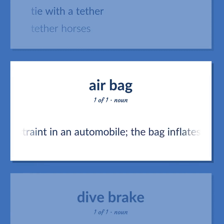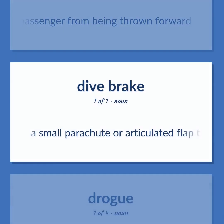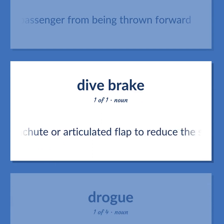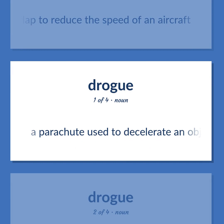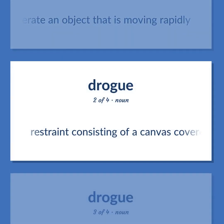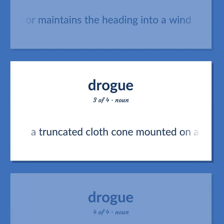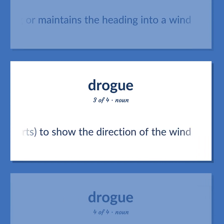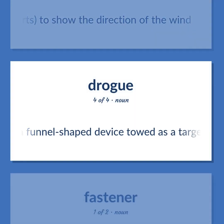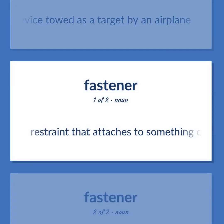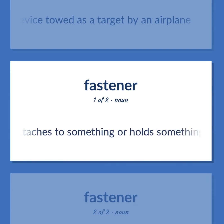Airbag: A safety restraint in an automobile; the bag inflates on collision and prevents the driver or passenger from being thrown forward. Drogue: A small parachute or articulated flap to reduce the speed of an aircraft. A parachute used to decelerate an object that is moving rapidly. Restraint consisting of a canvas-covered frame that floats behind a vessel; prevents drifting or maintains the heading into a wind. A truncated cloth cone mounted on a mast, used, e.g., at airports, to show the direction of the wind. A funnel-shaped device towed as a target by an airplane.